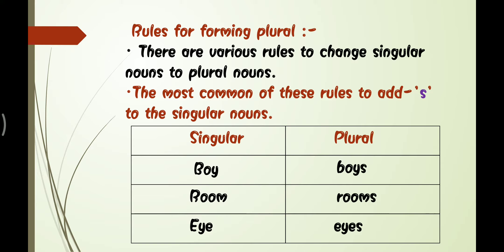The most common rule is to add S to singular nouns to make them plural. For example, boy becomes boys, room becomes rooms, and eye becomes eyes. We add S to these words to change them from singular to plural.